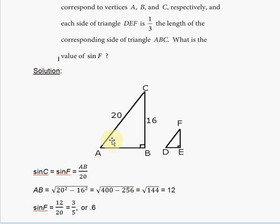This leads us to deduce that sine C is equal to sine F, and that means that AB, the only unknown side, will be divided by 20. So all we need is the value of AB to find the value of sine F. To find AB, we're given BC and AC, so we can use Pythagorean theorem to find the missing side.